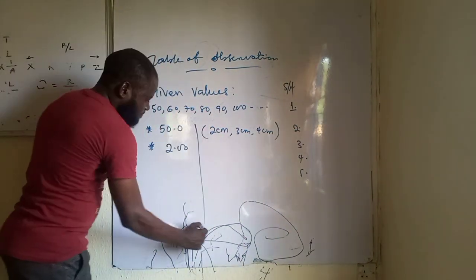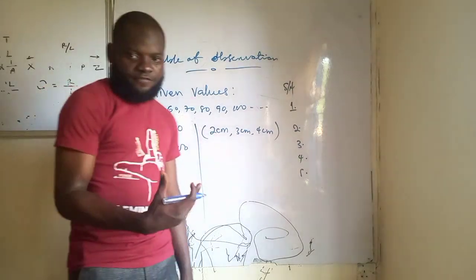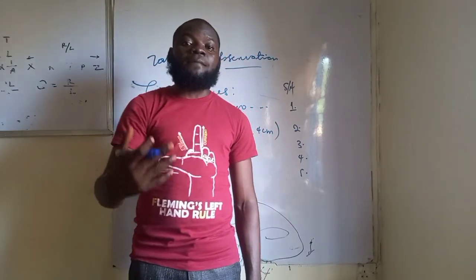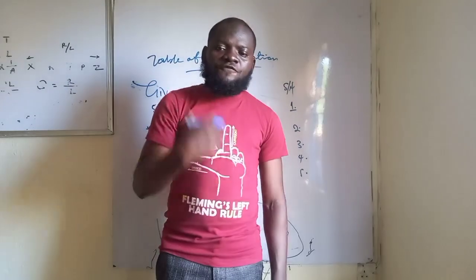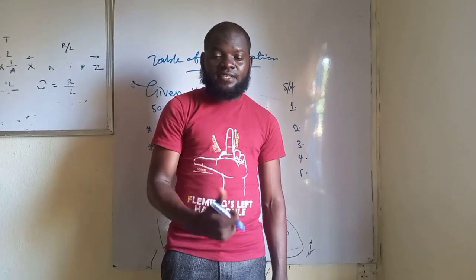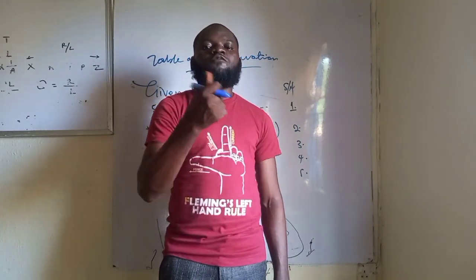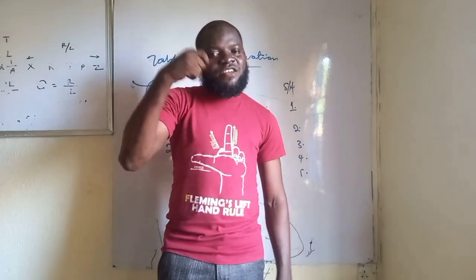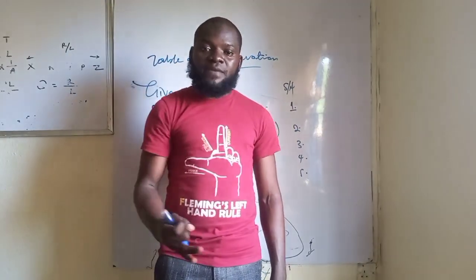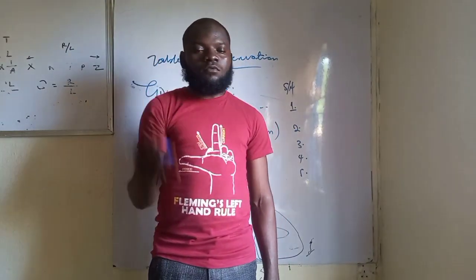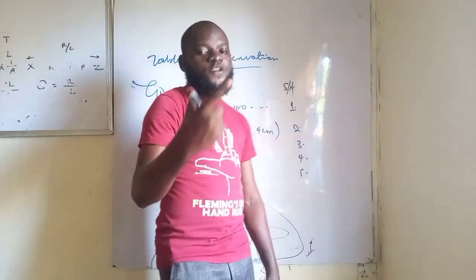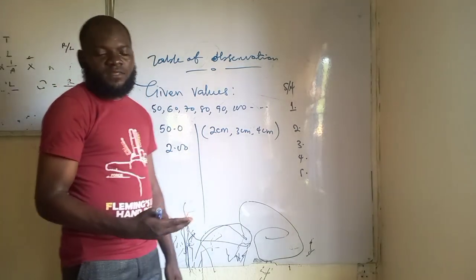For every reading that you are now taking by yourself — for example, you place the jockey at 10 centimeter mark and record the value on the ammeter — that value is what you are picking from the measuring instrument. Because you are picking it from the measuring instrument, you have to leave it in two decimal places. Any reading you take by yourself from a measuring instrument — whether from the meter rule, ammeter, or stopwatch — you leave your answer in two decimal places.